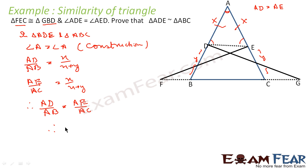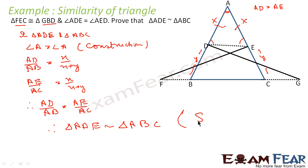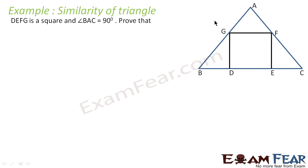Therefore, triangle ADE is similar to triangle ABC by SAS — side-angle-side. The sides are in proportion and the included angle is equal. Very simple. Let us take one more example.